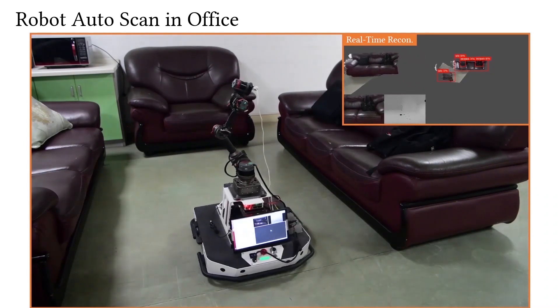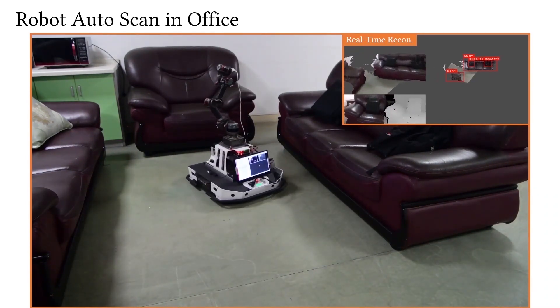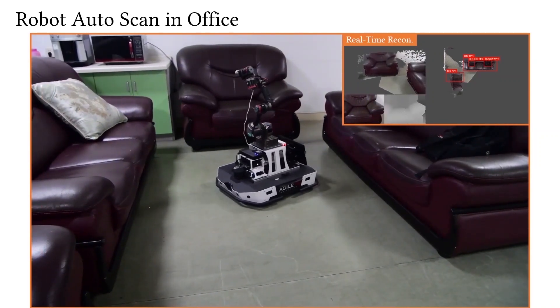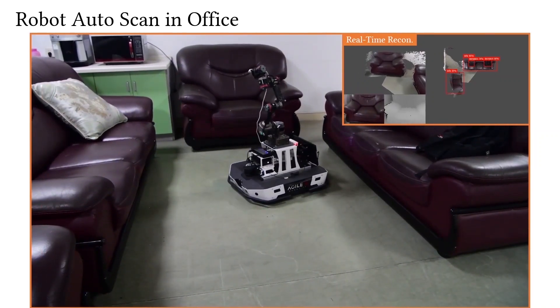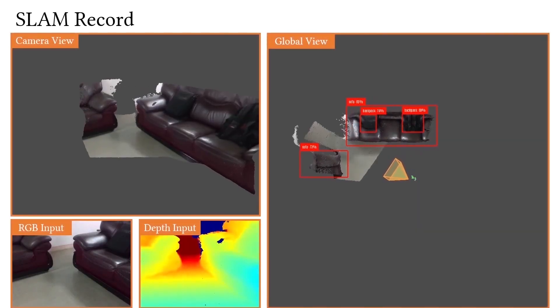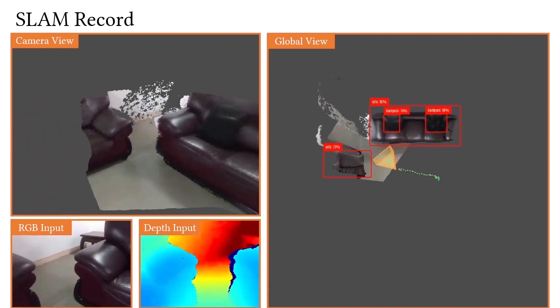The robot does online SLAM reconstruction and feeds the reconstruction results to a neural network for object segmentation and recognition. The recognition score inversely optimizes the camera and robot poses, so that the robot can autonomously judge the subsequent scanning route to improve the score.